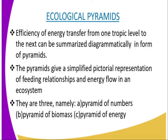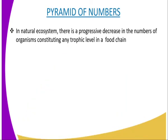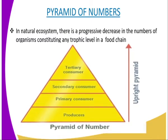Now let us look at the pyramid of numbers. In natural ecosystems, there is a progressive decrease in the numbers of organisms constituting any trophic or feeding level in a food chain. The greatest number are the producers, as you can see from our diagram, followed in decreasing order by the primary consumers, the secondary consumers, tertiary consumers, and least of all the quaternary consumers. When these numbers are drawn to scale, the above food relationship produces a pyramid-shaped histogram or pictogram called the pyramid of numbers.